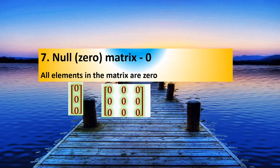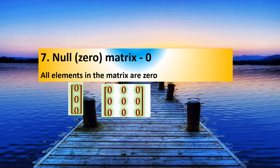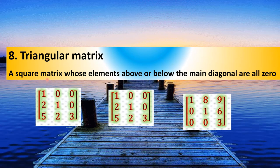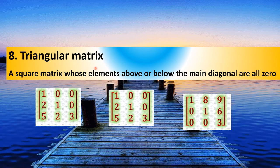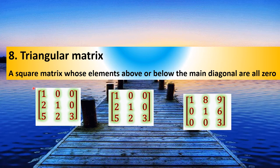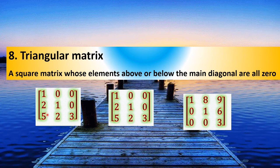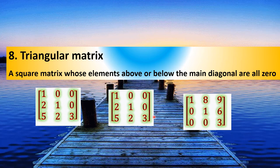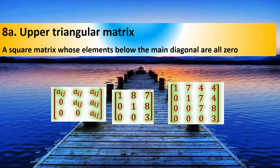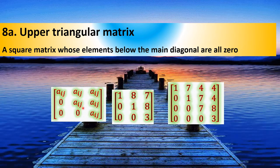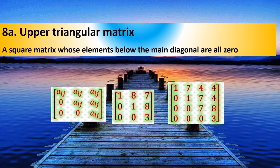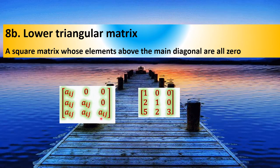The null matrix has all elements equal to zero. The triangular matrix includes the lower triangular matrix, where the triangle portion above the diagonal is zero, and the upper triangular matrix, where the triangle portion below the diagonal is zero.